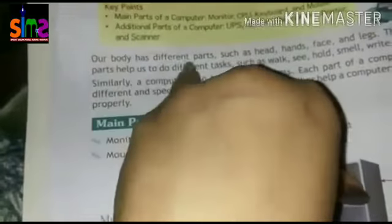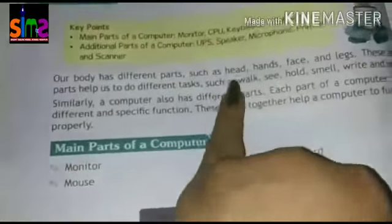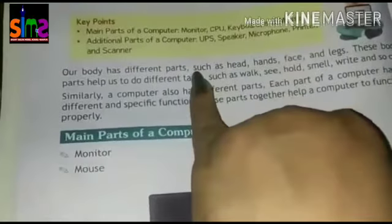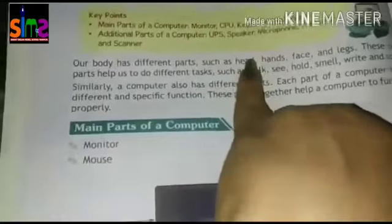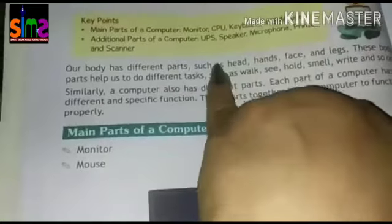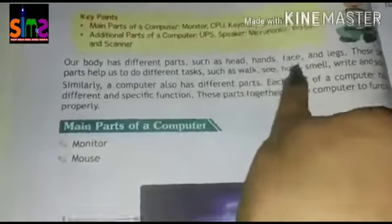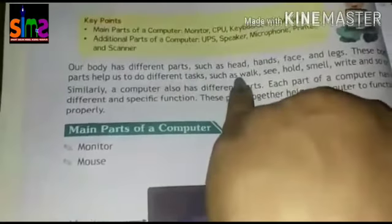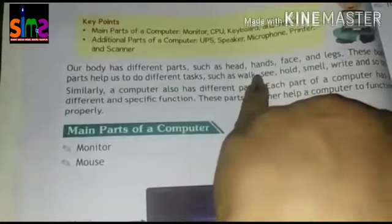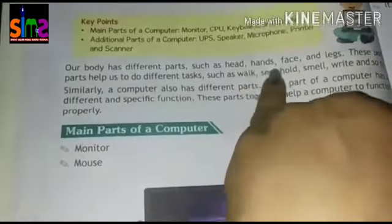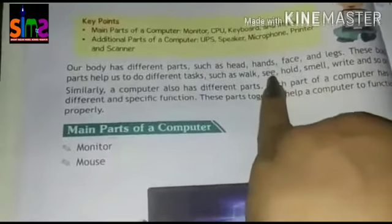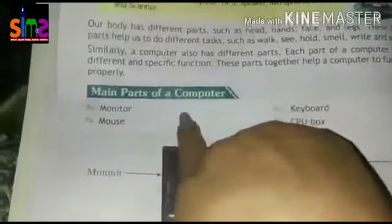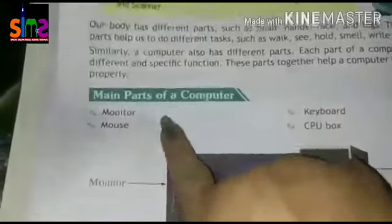Our body has different parts such as head, hands, face, and legs. Similarly, a computer also has different parts. There are four main parts of the computer: number one — monitor, number two — keyboard, number three — mouse, and number four — CPU box.